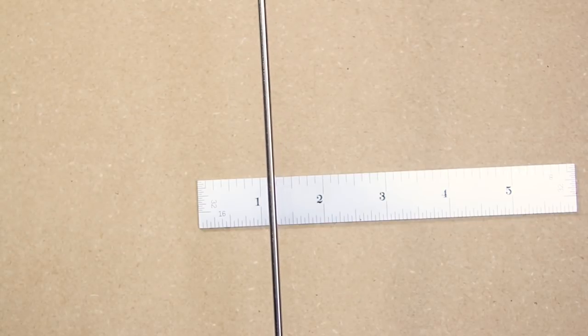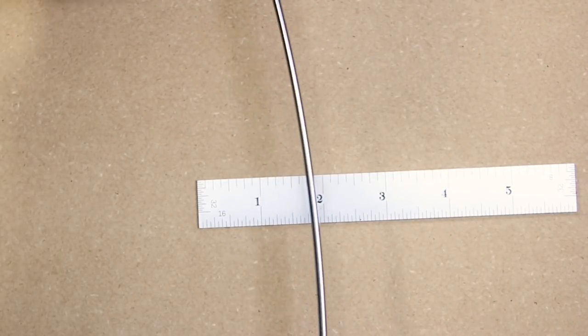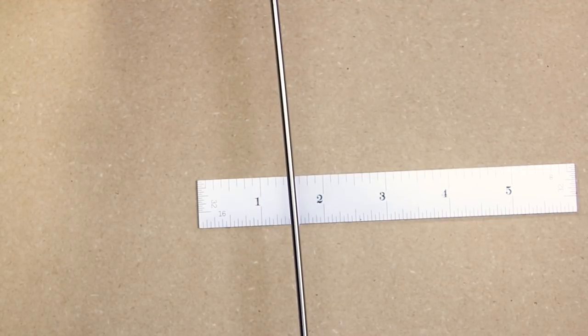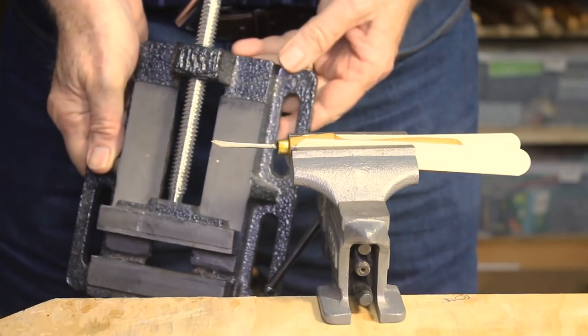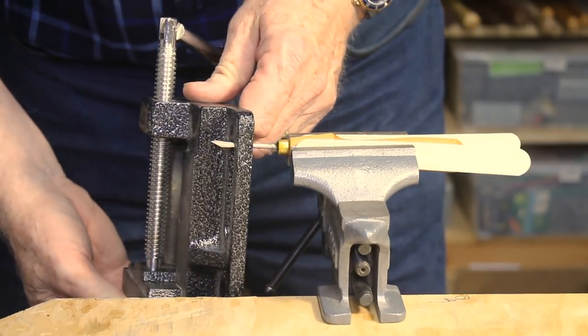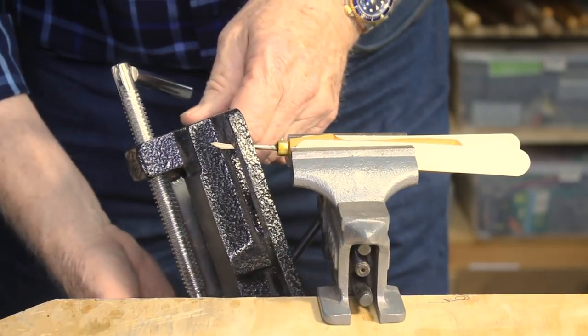Now, a long length of one eighth inch rod feels somewhat flexible. Is it really stout enough to cut hard wood? To demonstrate just how strong and stiff the finished tool will be, I have hung a rather large cast iron vice from the blade and you can see that there is no deflection whatsoever.